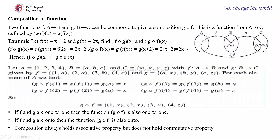Next comes the composition of functions. Two functions — f from A to B and g from B to C — can be composed to give the composition g∘f. For relations we apply from left to right; for functions we apply from right to left. This is an important distinction. g∘f is a function from A to C.